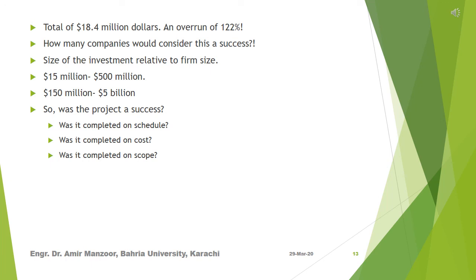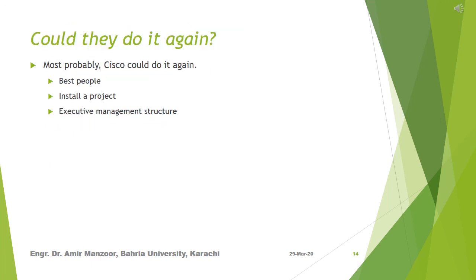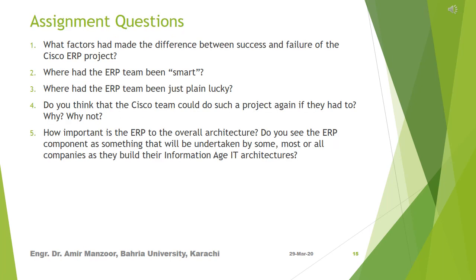This point is reinforced by Cisco's observation that the ERP implementation was a huge project for the company — the biggest ever at the time. So, was the project a success? Was it completed on schedule? Was it completed on cost? Was it completed on scope? Most probably, Cisco could do it again, because they had many natural advantages. However, there were many important factors responsible for the project's success: Cisco's commitment to get the best people, Cisco's commitment to install the project, and executive management structure that would not take no for an answer.